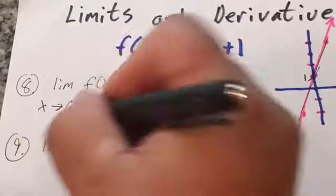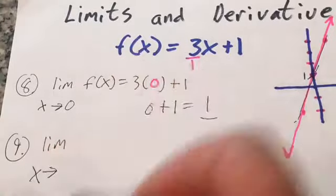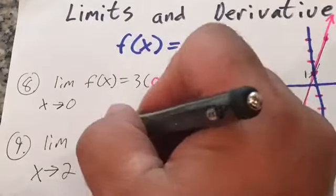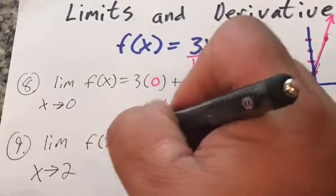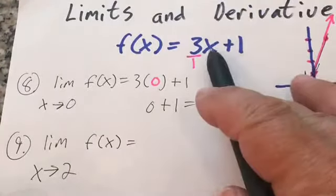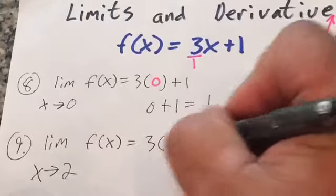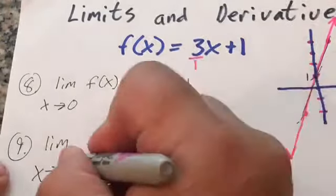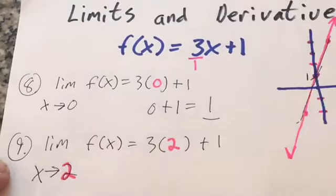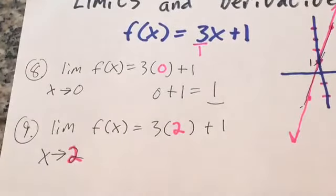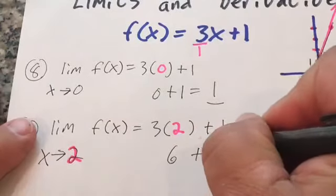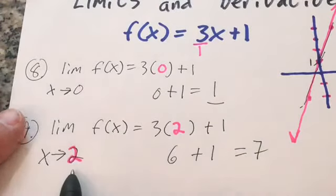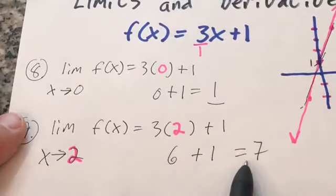Number nine: the limit as x approaches two. This isn't on my graph so it's easier to just do the algebra. I plug two in for x: 3 times two is six, plus one. The limit as x approaches two of f of x equals seven.